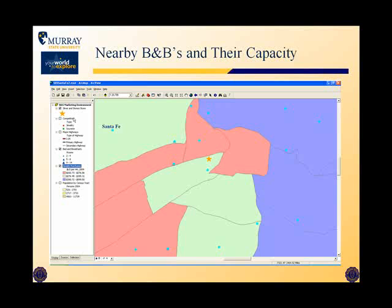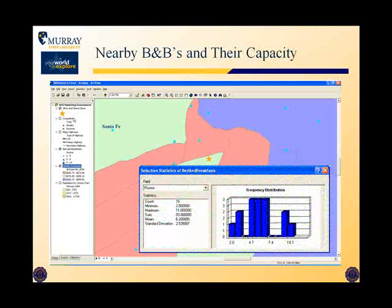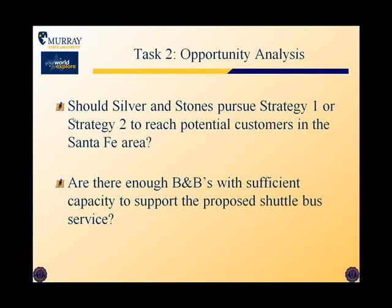You will also identify the bed and breakfasts that are close enough to the Silver & Stones store to allow them to run a shuttle bus service to those B&Bs and back to the store. You will determine the number of rooms available, and based on what you find out about the number of inns and rooms available, you'll make a determination about the feasibility of the shuttle bus service for this firm.